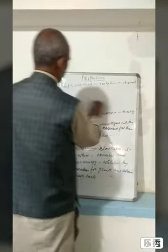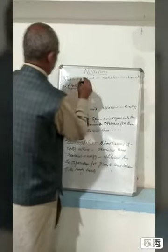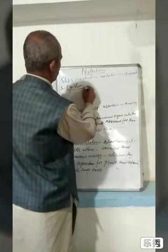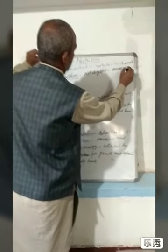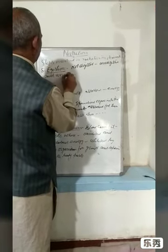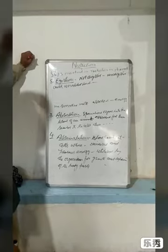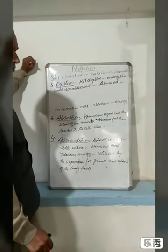The last step of nutrition in animals is egestion. The food that an organism takes — not all of it is digested. Some of it remains undigested and unabsorbed. This unabsorbed or undigested food is thrown out by the animals. This process is known as egestion.